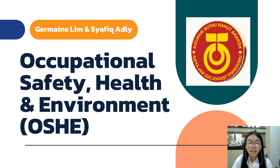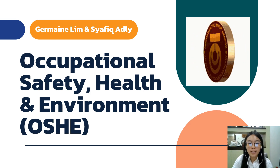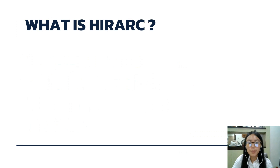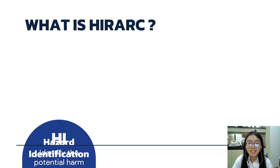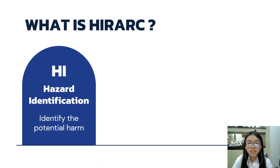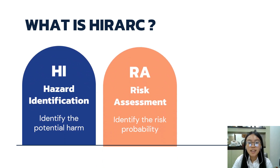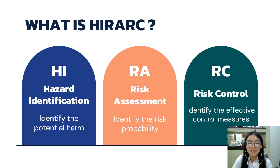Talking about OSHAE, you need to know HIRAC, which is our main discussion today. What is HIRAC? It is a three-step risk management through HI: Hazard Identification, RA: Risk Assessment, and RC: Risk Control.